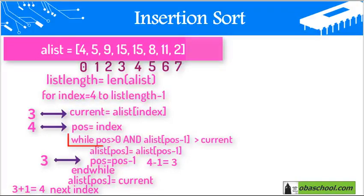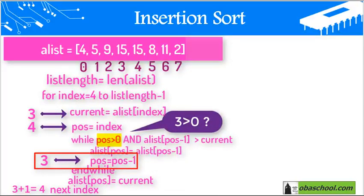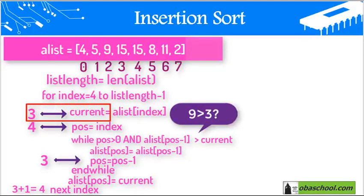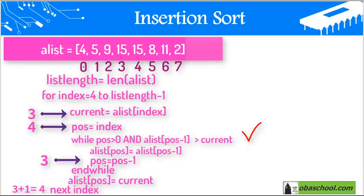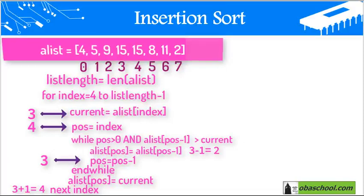We re-enter the while loop, continuing until pause is 0 or one of the conditions is false. While pause (which is now 3) is greater than 0, this condition is true. And list[pause-1], which is 3 minus 1 = index 2, contains value 9. Is 9 greater than the current value of 3? The condition is true. Now we switch the numbers: we put list[pause] at index 3 the value from list[pause-1] = list[2] = 9, placing 9 at index 3.